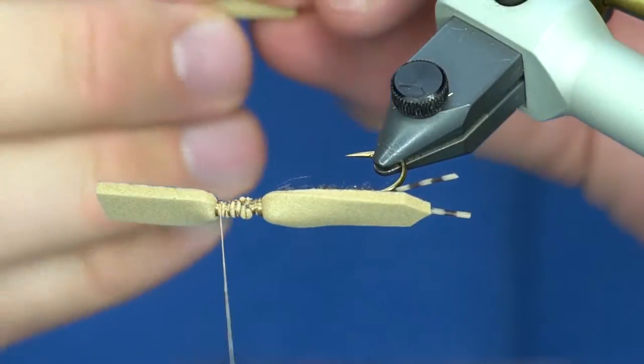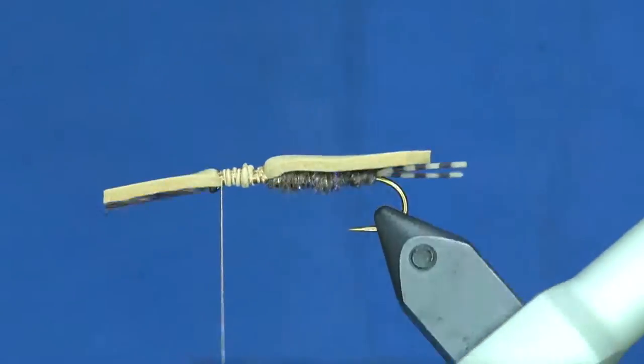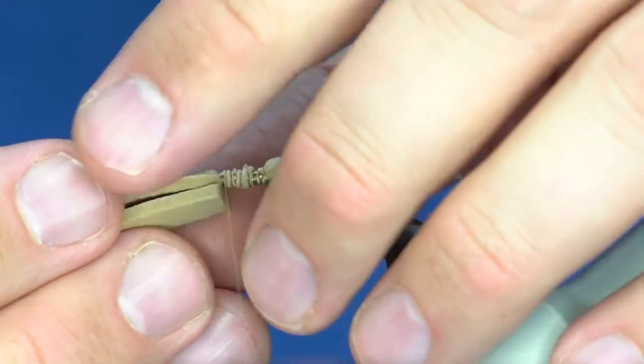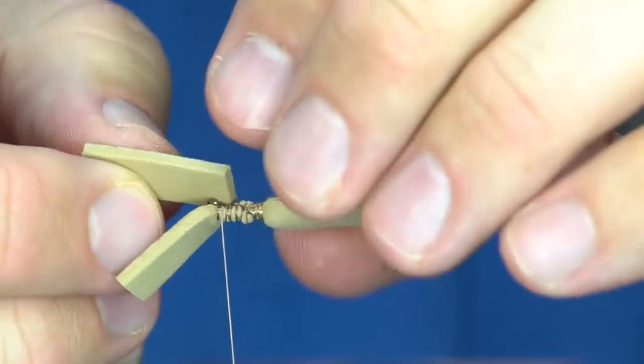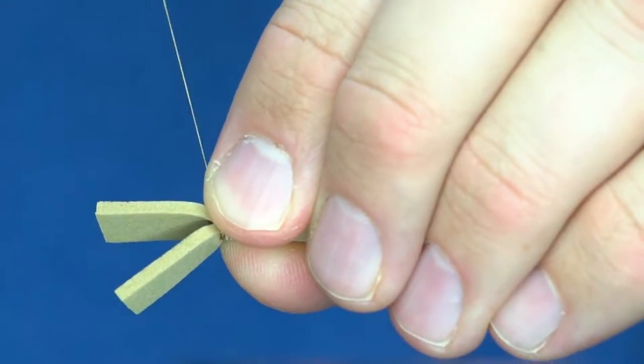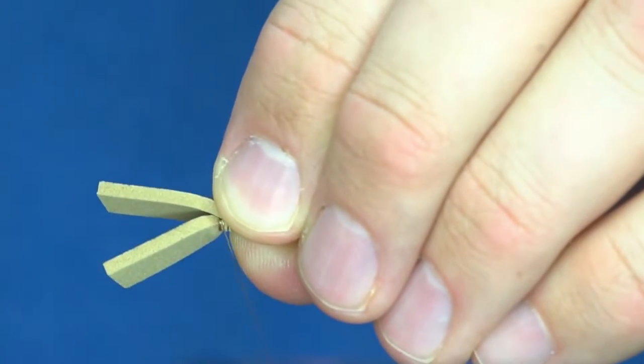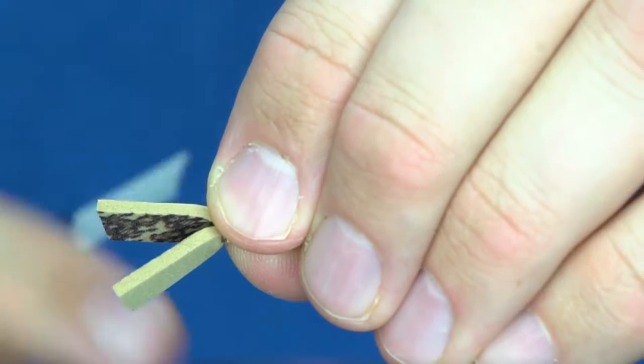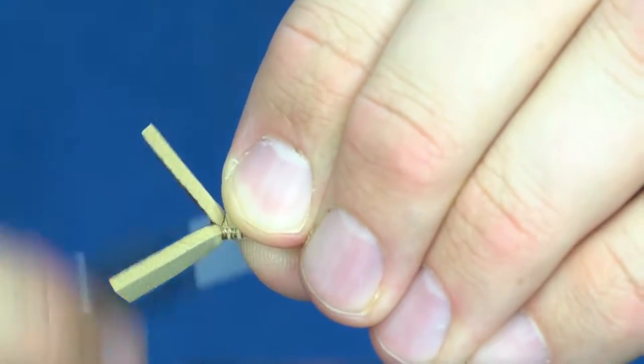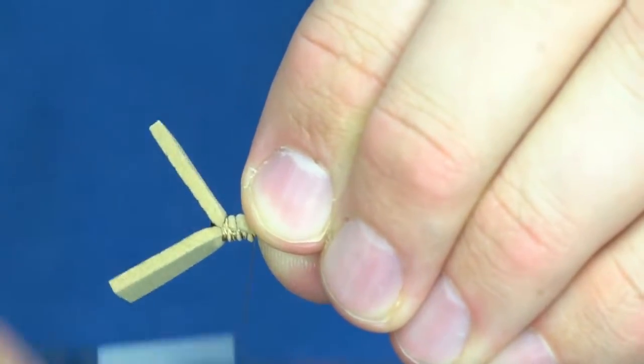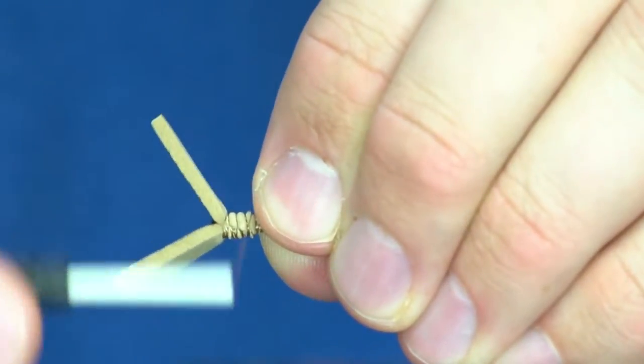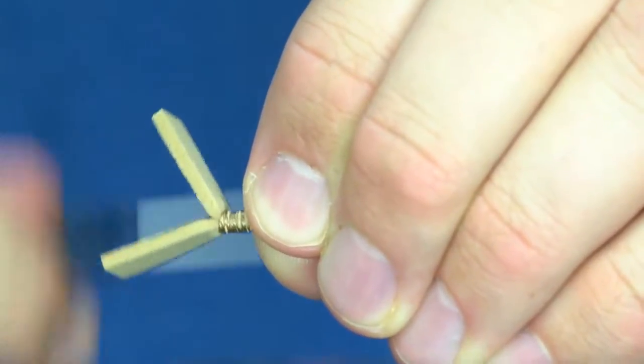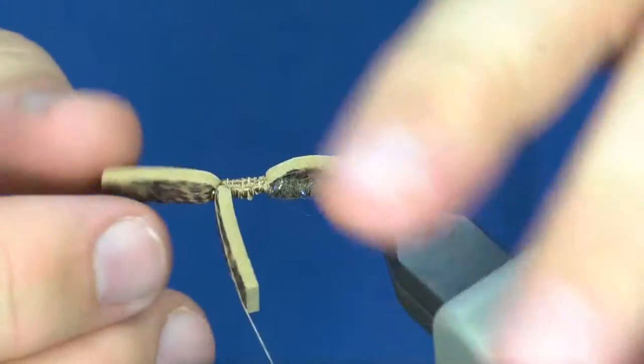I'm going to do the same thing on the bottom. The bottom is a little bit trickier. You want to make sure that the foam or that the photo side is touching each other because we're going to fold those back. You want to really cinch that down tight so that it doesn't roll when you're fishing it.